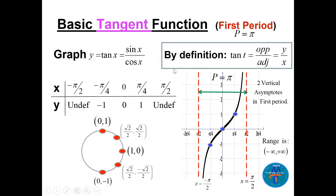Let's graph the basic tangent. We know the tangent function is sine x over cosine x, so we can evaluate some values. Choosing x values of minus pi over 2, minus pi over 4, 0, pi over 4, and pi over 2 covers one period of pi. At x = minus pi over 2, tan is undefined because cosine of minus pi over 2 is 0. Similarly, tan of pi over 2 equals sine pi over 2 over cosine pi over 2, which is also undefined.